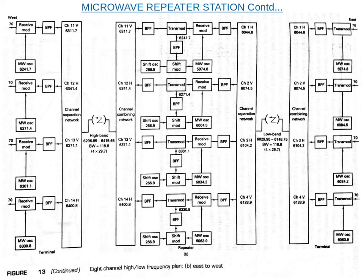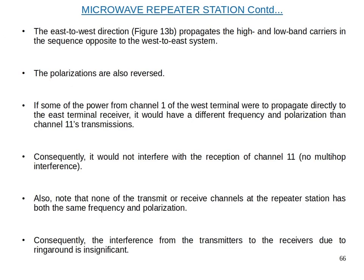Consequently, it would not interfere with the reception of channel 11, so there is no multi-hop interference. Also note that none of the transmit or receive channels at the repeater station has both the same frequency and polarization. Consequently, the interference from the transmitters to the receivers due to ring-around is insignificant.